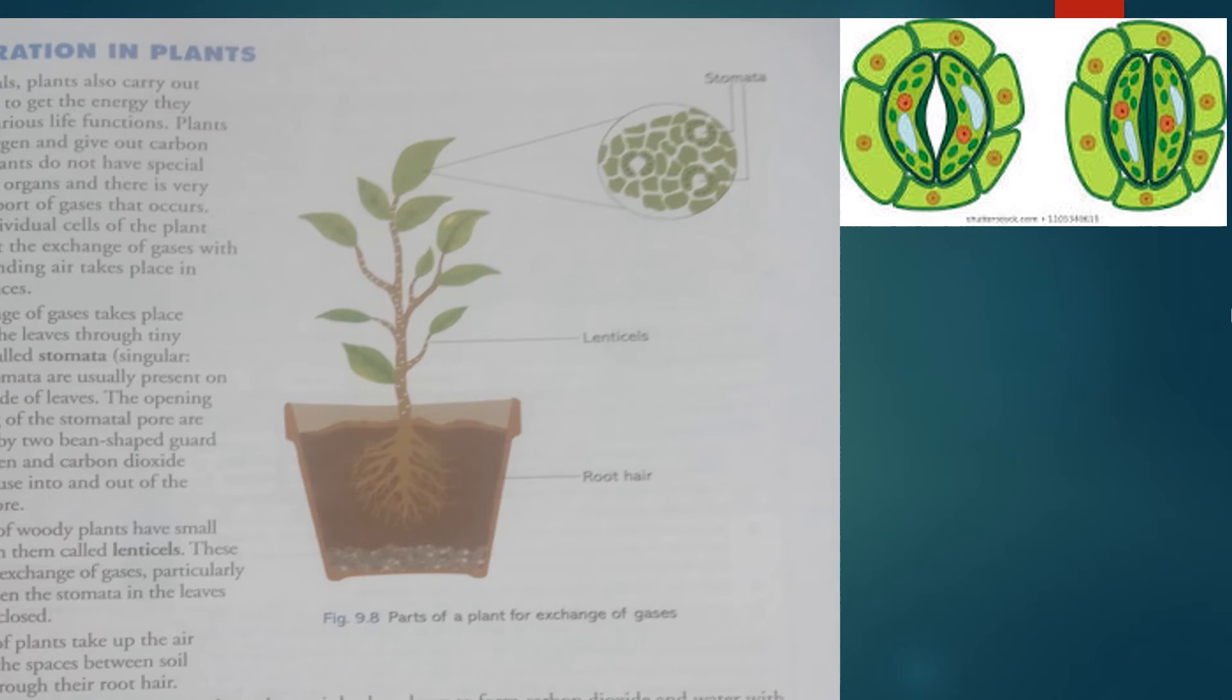In human beings, external respiration takes place in lungs. But in the case of plants, respiration takes place on leaves. On the underside of the leaves there are pores we call stomata, which are protected by two bean-shaped guard cells that can be closed or opened. The exchange of gas takes place through stomata.